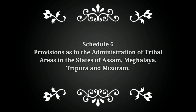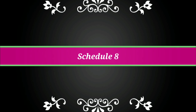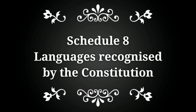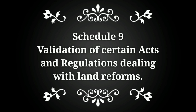Schedule 6 contains provisions as to the administration of tribal areas in the States of Assam, Meghalaya, Tripura, and Mizoram. Schedule 7 deals with the division of subjects into three lists: the Union List, the State List, and the Concurrent List. Schedule 8 covers languages recognized by the Constitution, and Schedule 9 deals with the validation of certain acts and regulations dealing with land reforms.